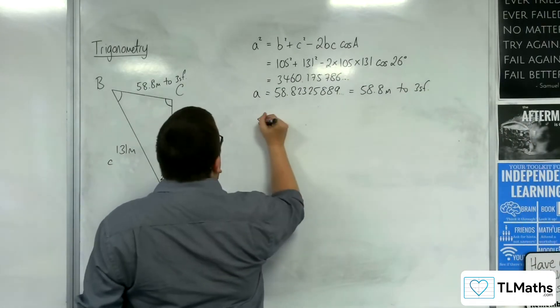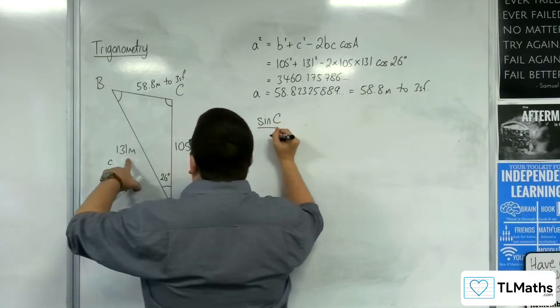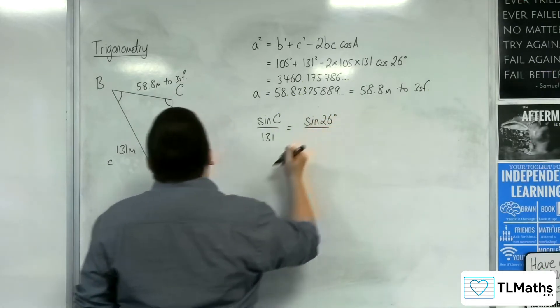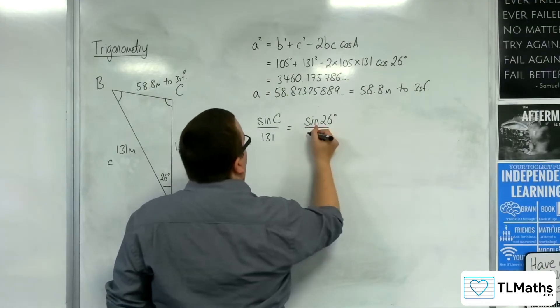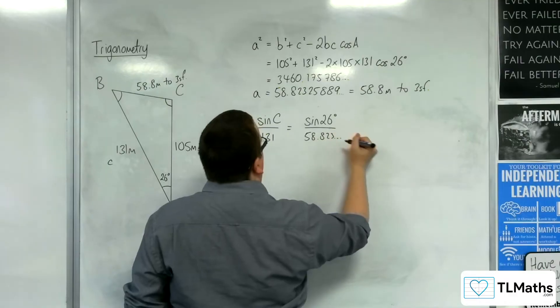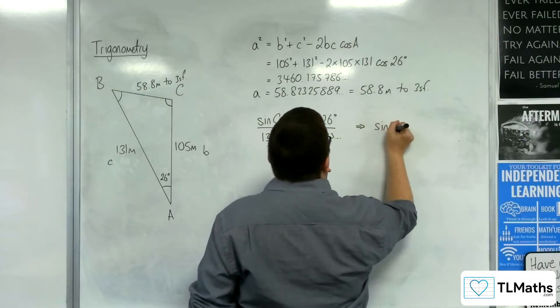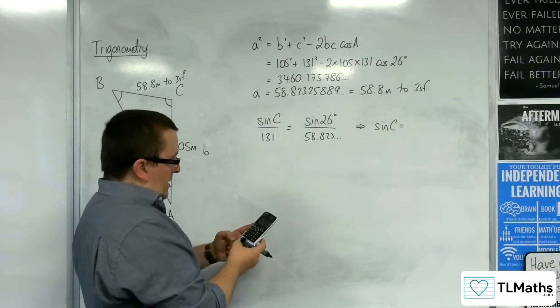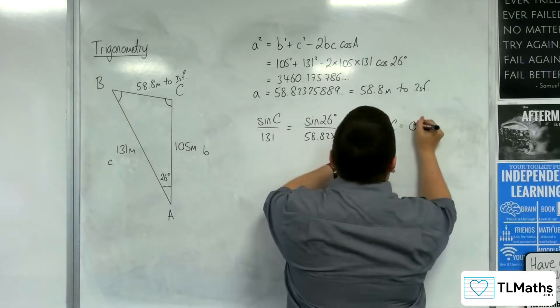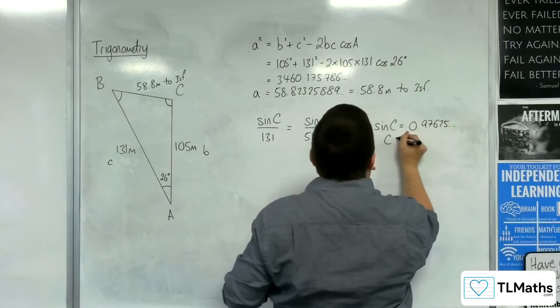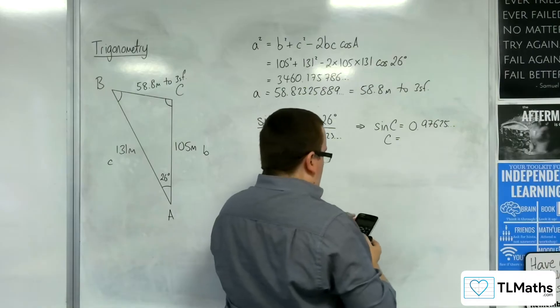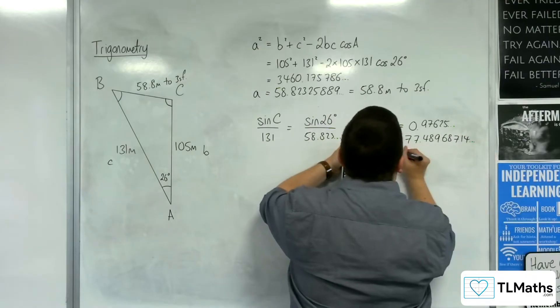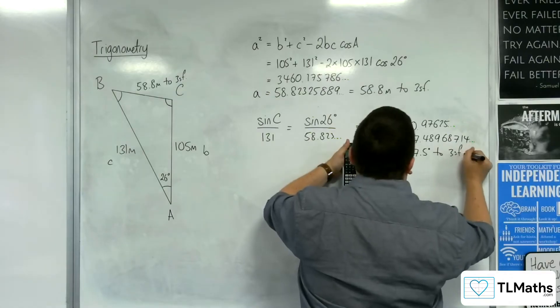So, everything seems perfectly fine. Sine of the angle c over 131 will be equal to sine of the angle 26 over the 58.823. So, sine of the angle c, so sine of 26 divided by that 58.823, and then times that by 131, gets me 0.97625. So, c is the inverse sine of that, and that gets me 77.48968714, so 77.5 degrees to 3 sig fig.